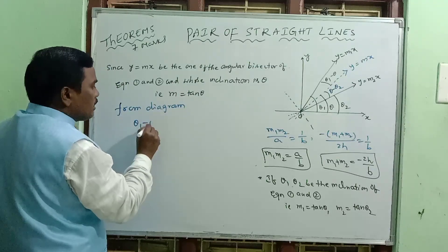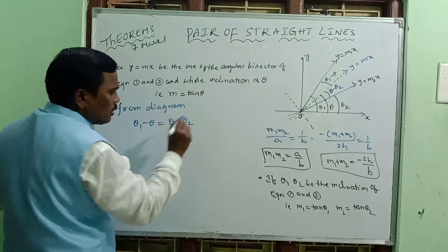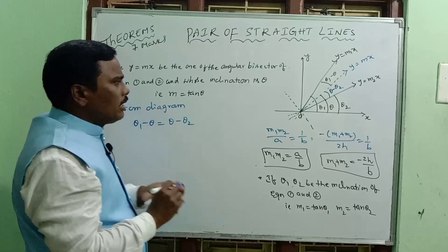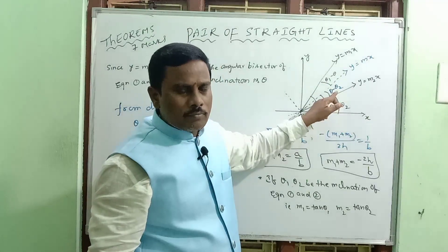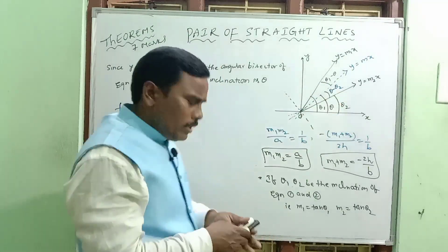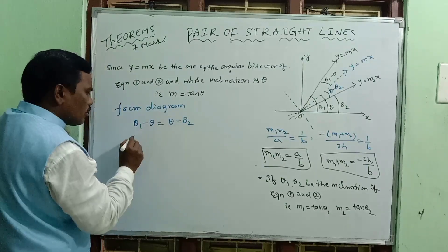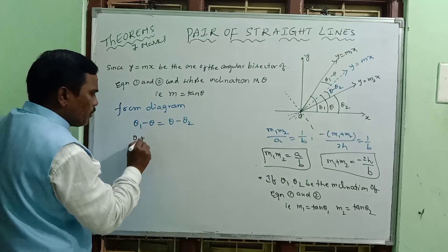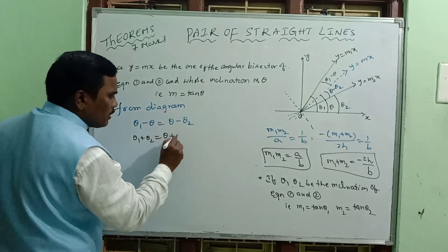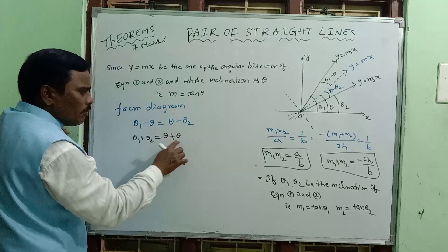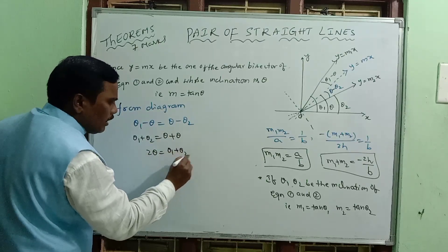From the diagram, the key relationship is: theta1 minus theta equals theta minus theta2. Therefore, theta1 plus theta2 equals 2 theta, which gives theta equal to theta1 plus theta2 divided by 2.